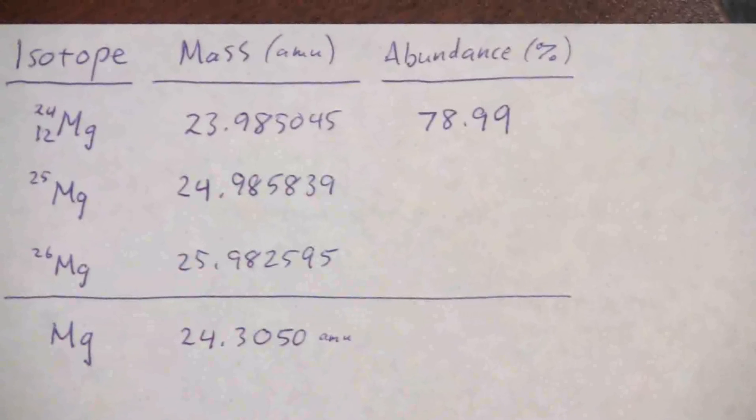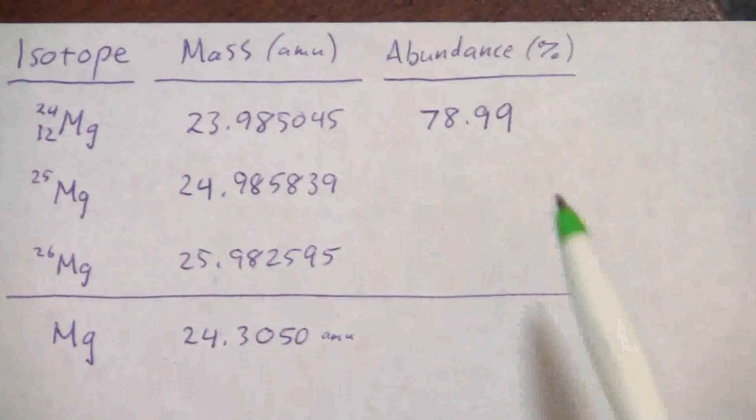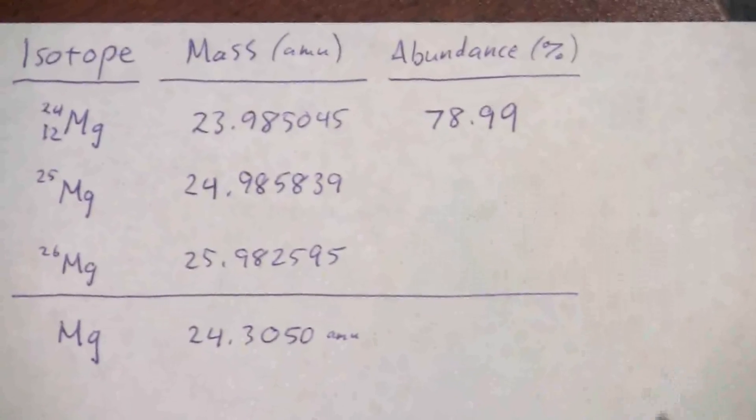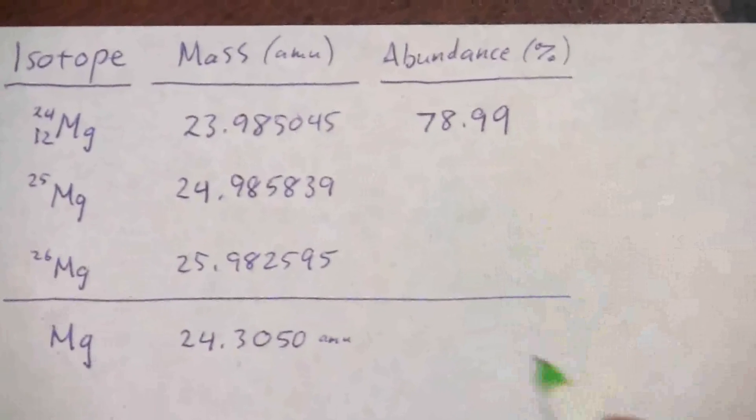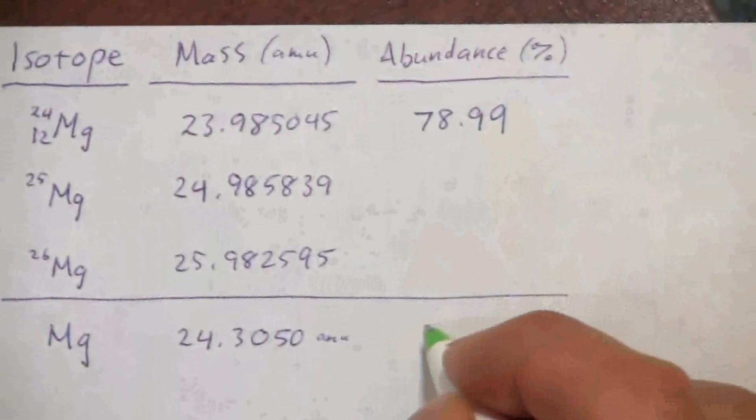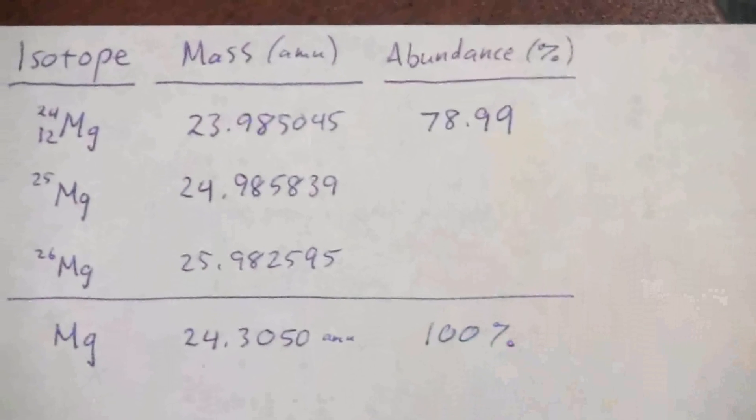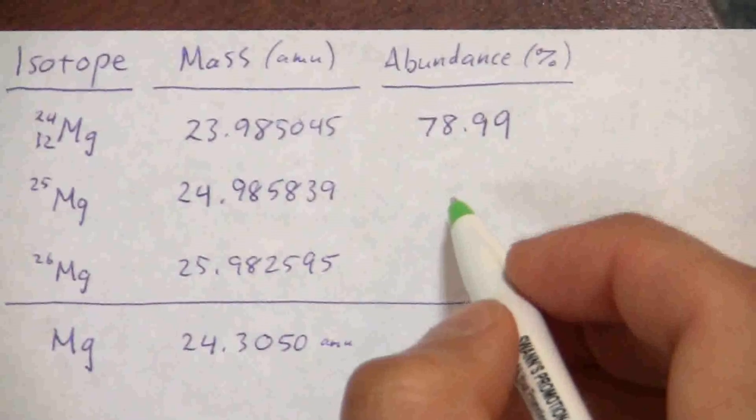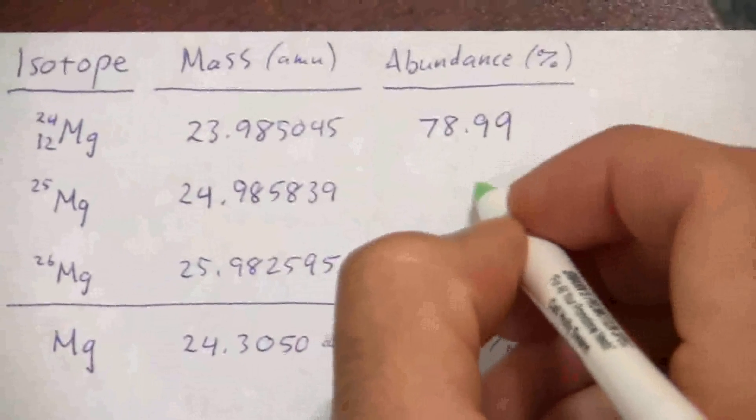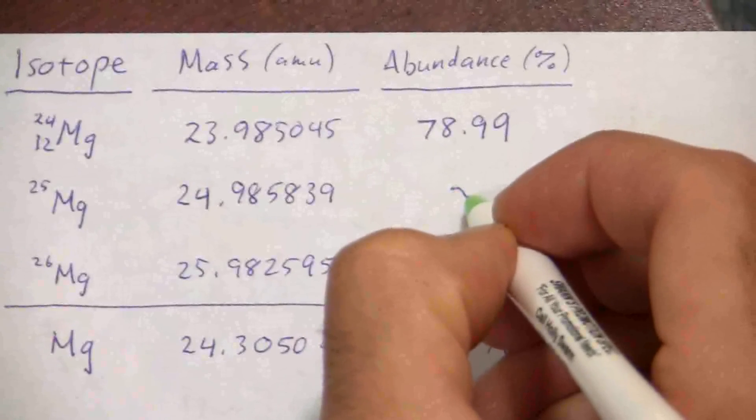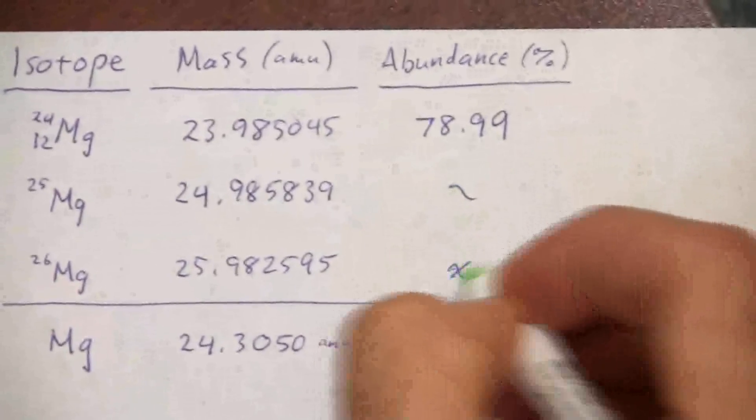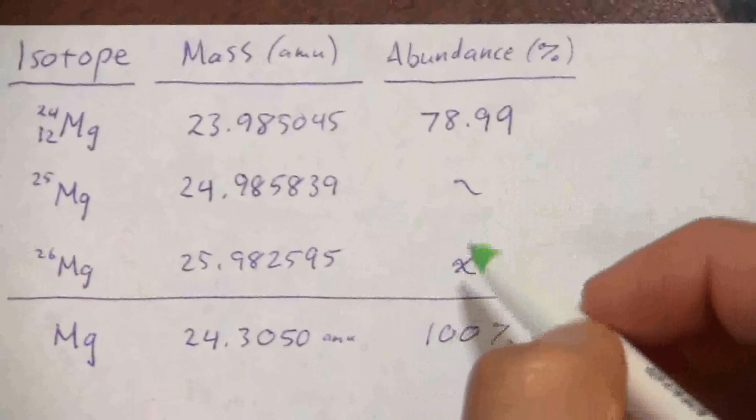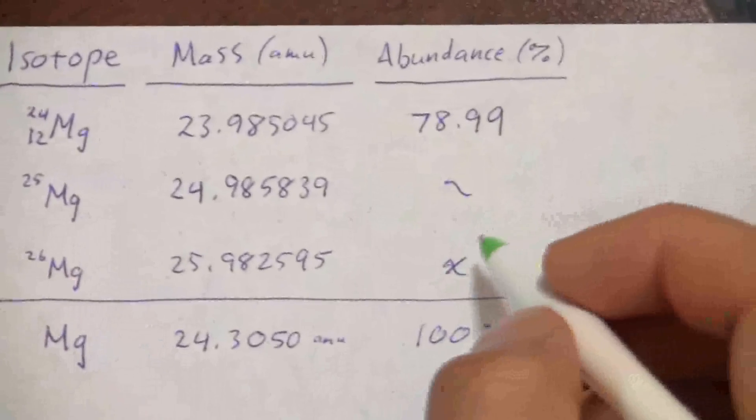So let's set this problem up, and we want to find out what is the abundance of these other isotopes. So I don't know what it is, but I do know that the total has to add up to 100%. So I'm going to call magnesium 26 x. It doesn't really matter, we can solve it either way, I just want to do it this way.